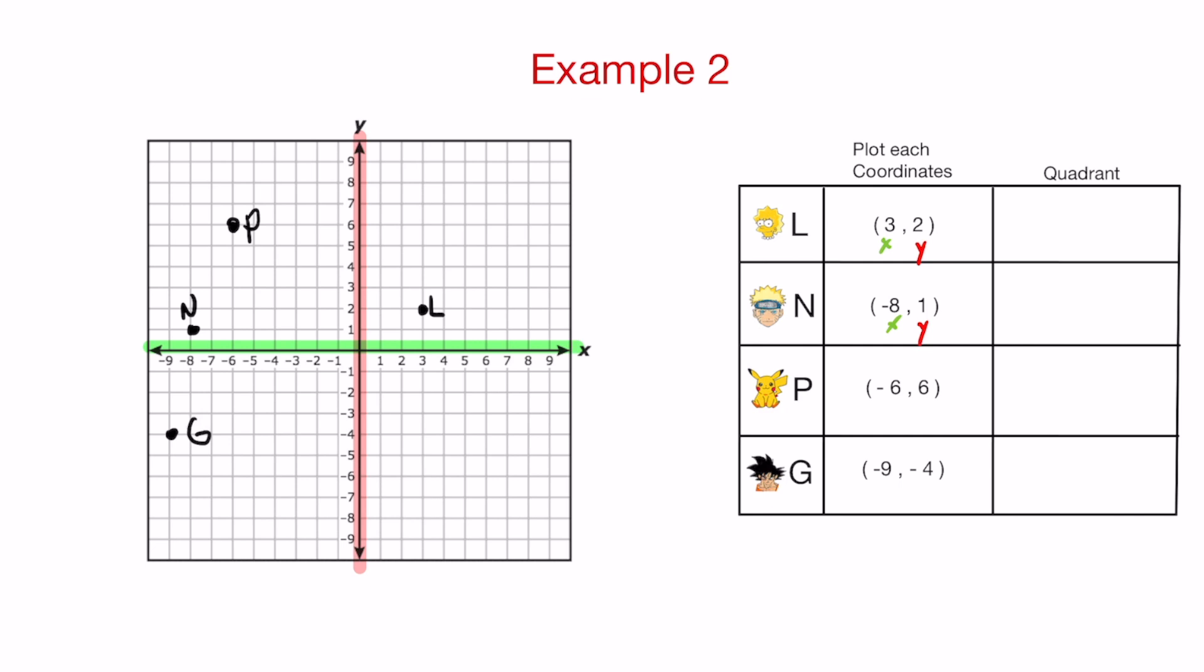Just to review the quadrants. Lisa is in quadrant one. That's this first section right here. Naruto is in quadrant two. What quadrant is Pikachu at? That's still quadrant two. And the last one is Goku. Goku is in quadrant three.